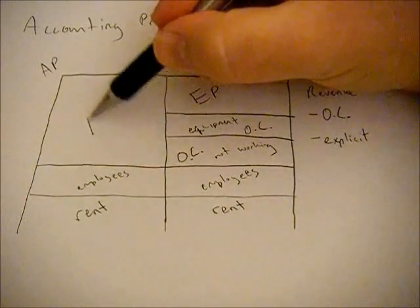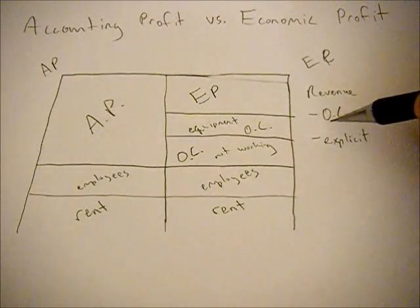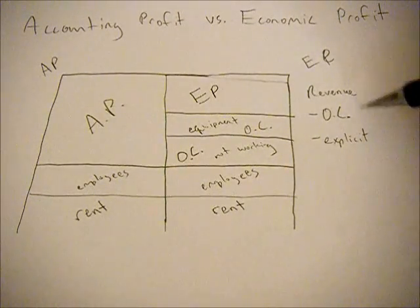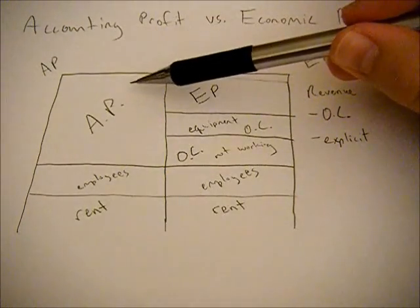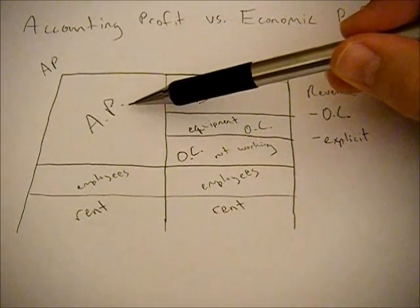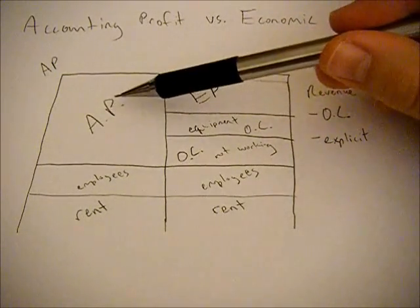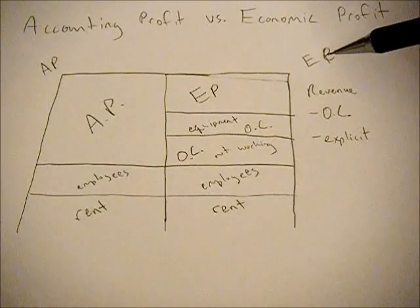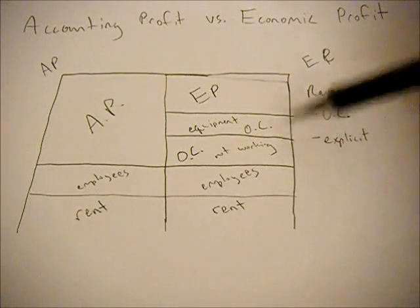However, on the accounting profit side, they don't take into account opportunity costs — it's simply revenue minus explicit costs. So when you balance the books for your taco shop, your accounting profit is going to seem huge, it's going to be very large, whereas your economic profit takes into account all these opportunity costs.